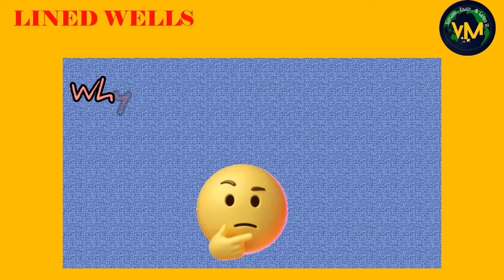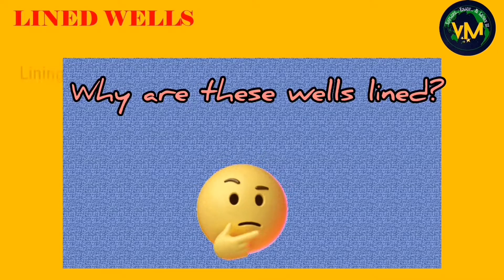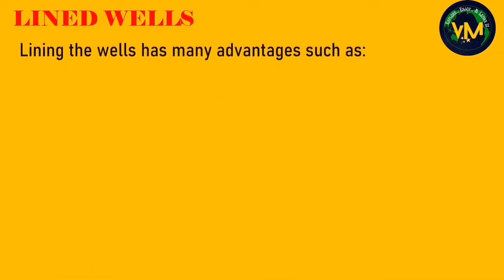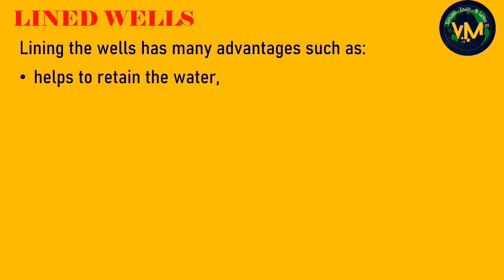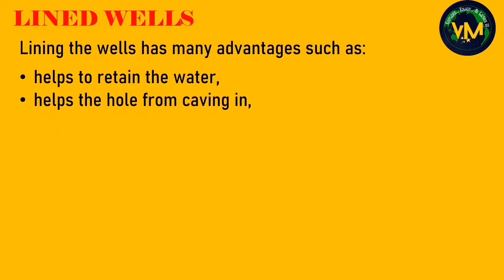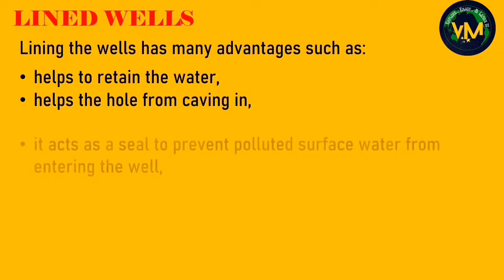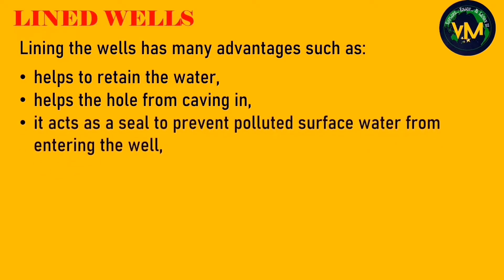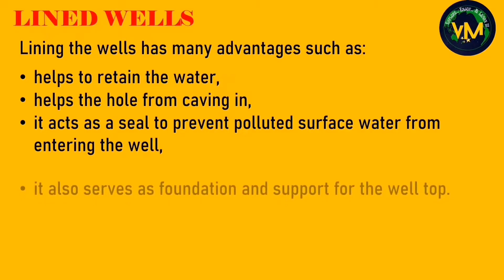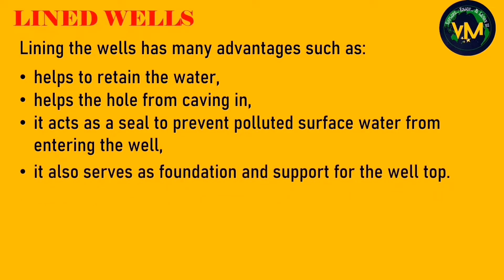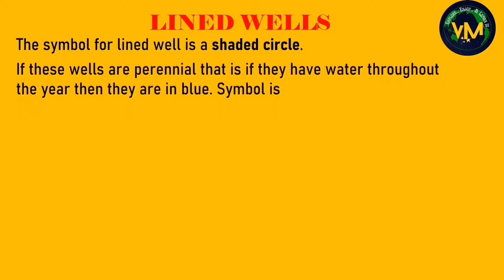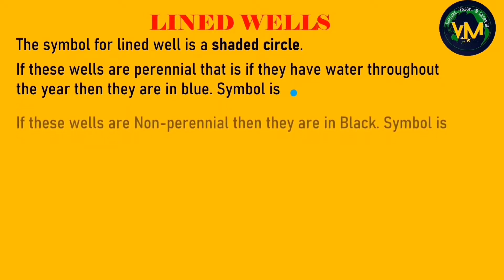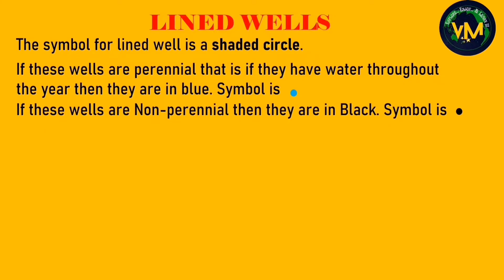You may wonder why these wells are lined. Lining the wells has many advantages: it helps to retain the water, it helps the hole from caving in, it acts as a seal to prevent polluted surface water from entering the well, and it also serves as foundation and support for the well top. The symbol for a lined well is a shaded circle — blue if perennial, and black if non-perennial.